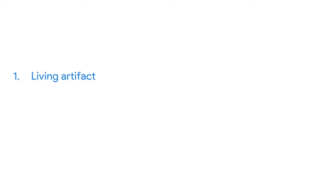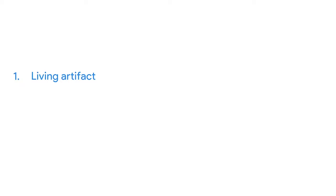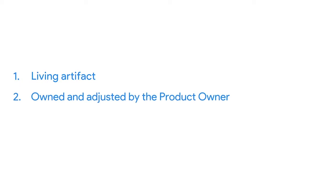There are three key features of a Product Backlog. First, the Product Backlog is a living artifact, meaning that items are added to the backlog at any time. The Product Backlog evolves throughout the whole lifecycle of the project and serves as a central guide for the team to know what to work on next. Second, the Product Backlog is owned and adjusted by the Product Owner. And finally, the Product Backlog is always a prioritized list of features. When there's new information or new features, those are added to the backlog in order of importance.